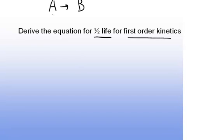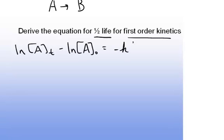We'll have to use the integrated rate law for first-order, where A is some generic reactant. And the integrated rate law is the natural log of A at sometime T, minus the natural log of A initial, equals negative kT.